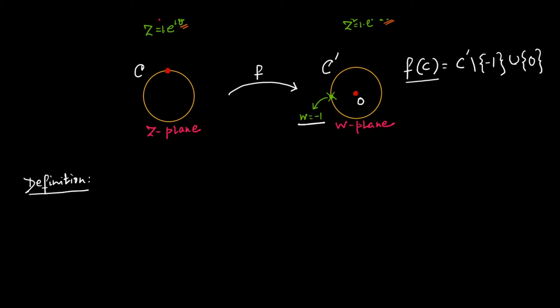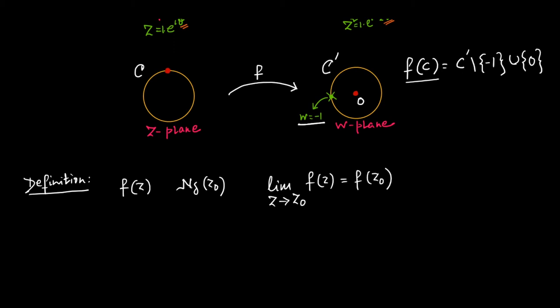Let f(z) be defined and single-valued in a neighborhood of z = z₀ — a delta-neighborhood N_δ(z₀). This function f(z) is said to be continuous at z = z₀ if the limit as z tends to z₀ of f(z) equals f(z₀). That is, when the limiting value at a particular point is the same as the functional value.